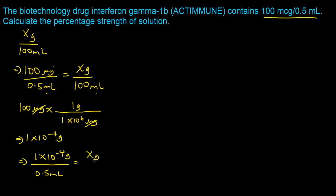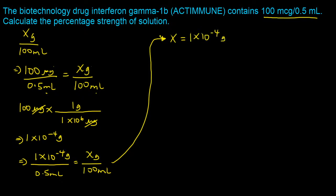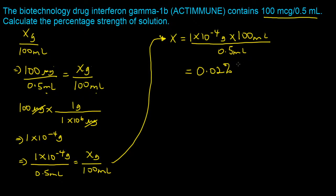We solve for x: x equals 1×10⁻⁴ grams times 100 milliliters, all divided by 0.5 milliliters. That gives us 0.02 percent. So when you have 100 micrograms in 0.5 mL, it is equivalent to a 0.02% solution.